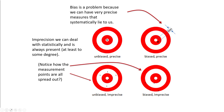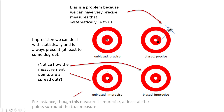Imprecision we can deal with statistically, and it's always present to some degree. Notice how the measurement points are all spread out — that's imprecise — but even so, all the points surround the true measure and point us in the right direction. Bias, on the other hand, is something that shifts us away from the truth in a systematic way.